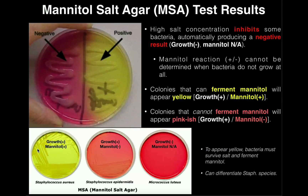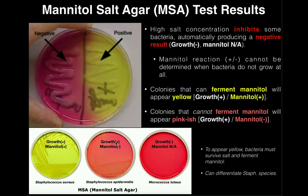So for MSA, if we were classifying the results, the full answer would be growth positive, mannitol positive. But what happens if we have growth and it turns a rosy pink color? It's still growth positive, but in that case it's a mannitol negative reaction — as seen with Staphylococcus epidermidis. Colonies that cannot ferment mannitol will appear pink, and we classify those as growth positive, mannitol negative.